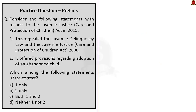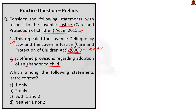Moving on to the second question about the Juvenile Justice (Care and Protection of Children) Act 2015. Statement 1: this act repealed the Juvenile Delinquency Law and Juvenile Justice (Care and Protection of Children) Act 2000 — this is correct, as the 2015 act replaced the 2000 act. Statement 2: the 2015 act offered provisions regarding adoption of abandoned children — this is also correct. Since both statements are correct, the correct answer is Option C — both one and two.